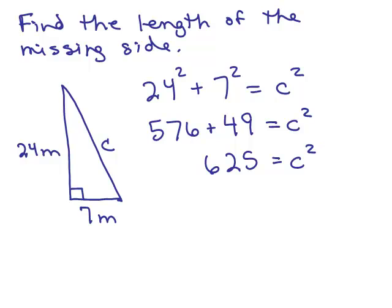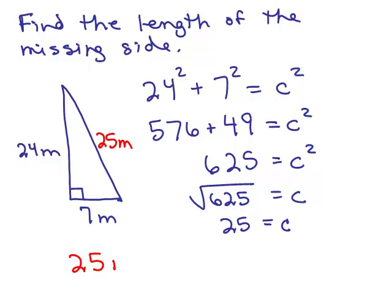So if C squared equals 625, then C is the square root of 625, and 625 is a perfect square. You could try to put it in your calculator, and you'll see it's 25. So in this case, C is 25, and we don't need to estimate it, so we know the length of this missing side is 25 meters, and that's our answer. No need to estimate it because it's exact.